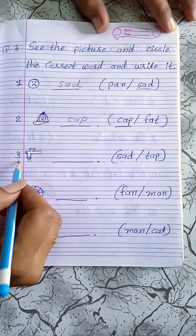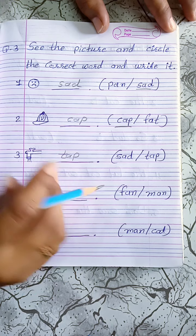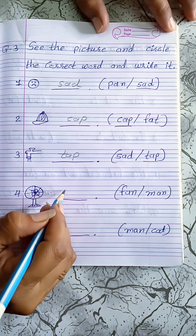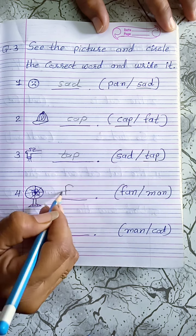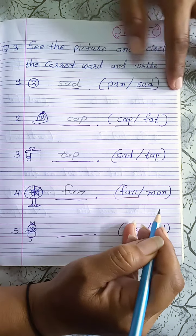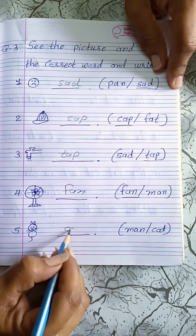Third, tap: T-A-P, tap. Fourth, fan: F-A-N, fan. Fifth, cat: C-A-T, cat.